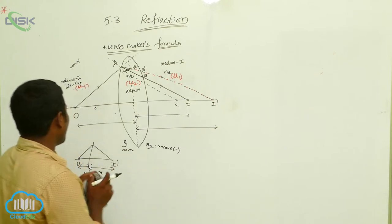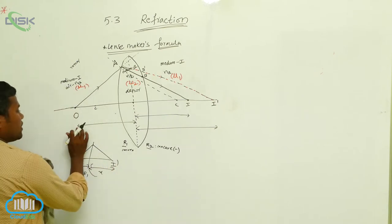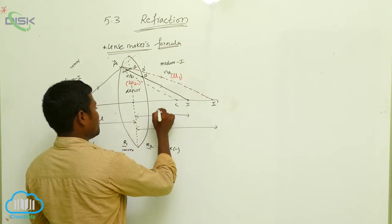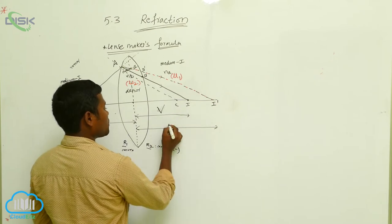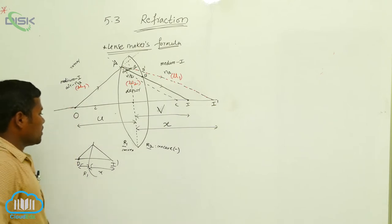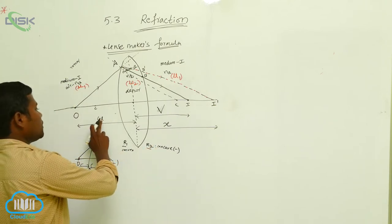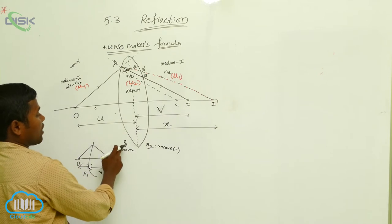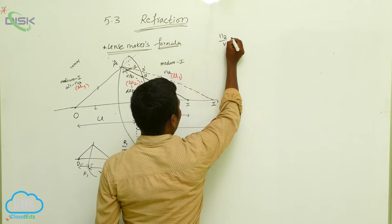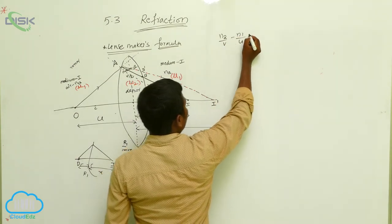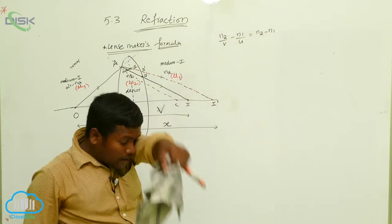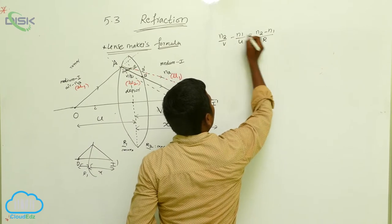See the relation: this to here distance is u, here to here is x, here to here is v. So what is the relation between u, v, and R? The formula we just derived: n2/v minus n1/u equals (n2 minus n1) divided by capital R. Remember this formula — n2/v minus n1/u equals (n2 minus n1)/R.